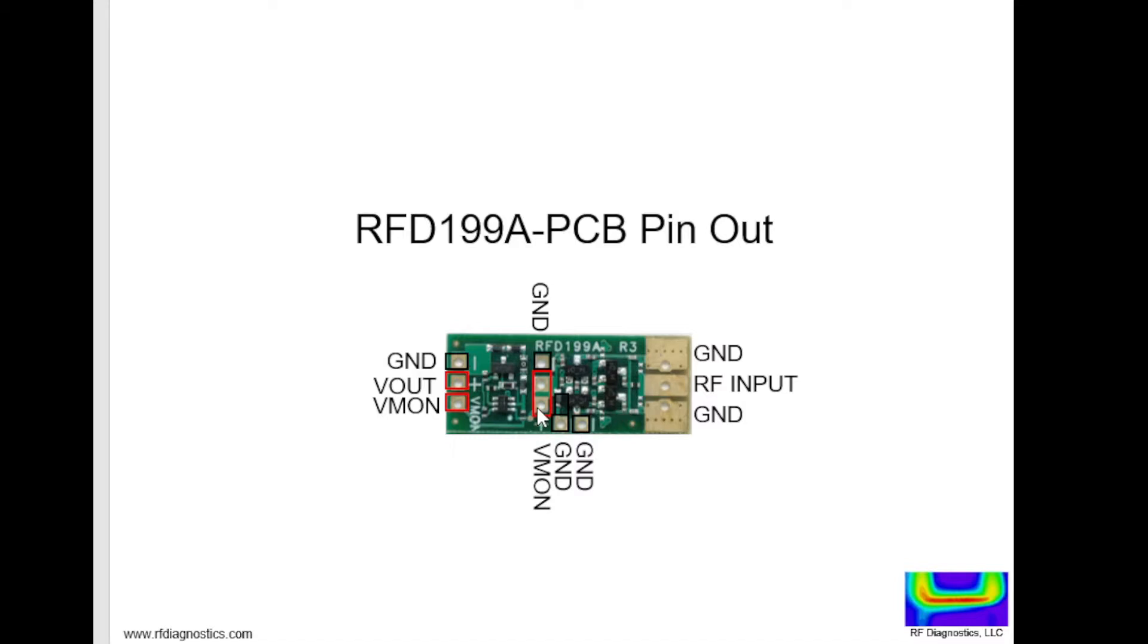The monitor voltage pin is the output of the RF to DC converter. You can solder your capacitor here between ground and this hot pin.